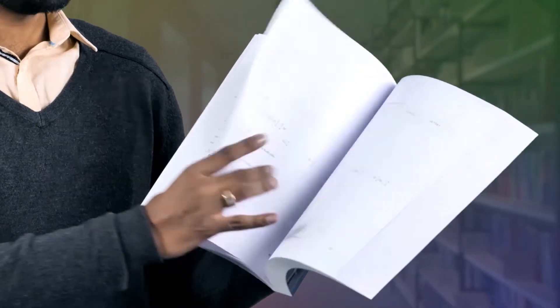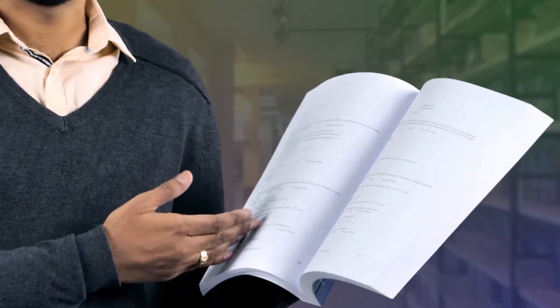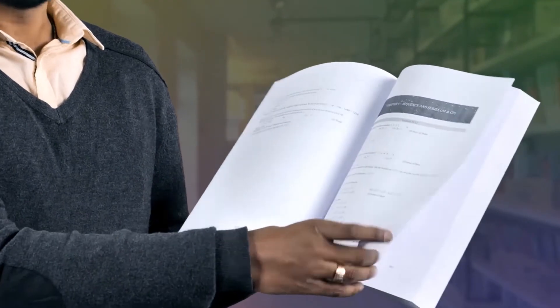As tricky as logarithms, you can see I'm just randomly turning the pages. So here you have questions which are based on permutations and combinations, again solved in a detailed manner. Then we have questions on sequence and series and everything covered in detail.